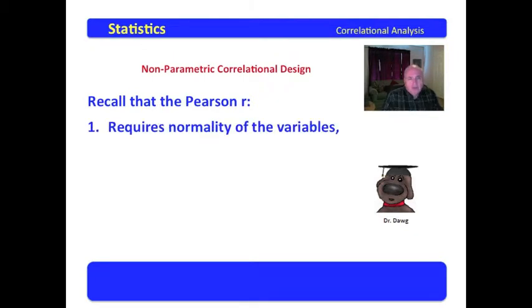Recall that the Pearson R requires normality of the variables. This is perhaps one of the most overlooked assumptions of the Pearson R. But when you're comparing variables with the Pearson R, you are assuming that they are normally distributed. In many cases, they are not.